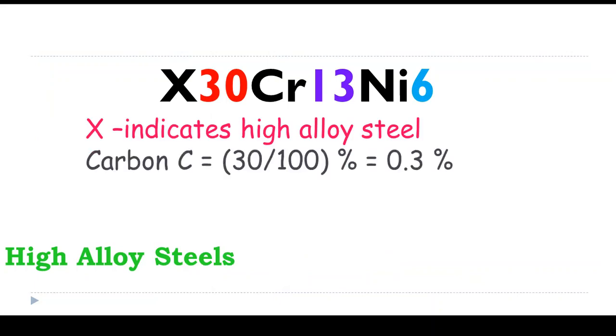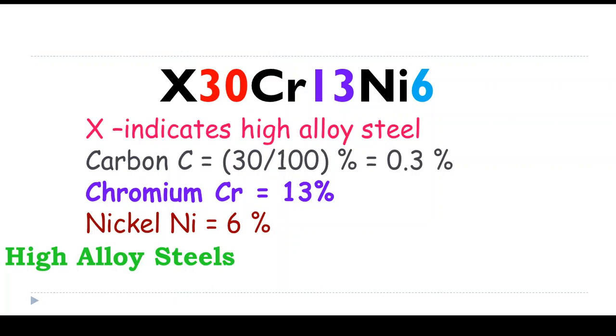X indicates high alloy steel, 30 divided by 100 is 0.3%. Chromium is 13%, no need to divide by any number. Nickel is 6%, no need to divide by any number. The difference between high alloy steel and alloy steel is that in high alloy steel the addition of all alloying elements would be more than 10%.